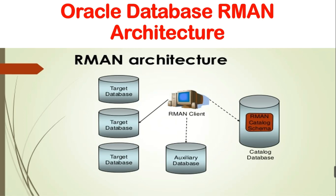Here is the RMAN architecture: we have the RMAN client, and it connects to the target database. We can connect RMAN to any number of target databases. There will also be an auxiliary database if we want to duplicate a database from a source database. And we have the RMAN catalog database, where all the backup information is stored in the RMAN catalog schema.